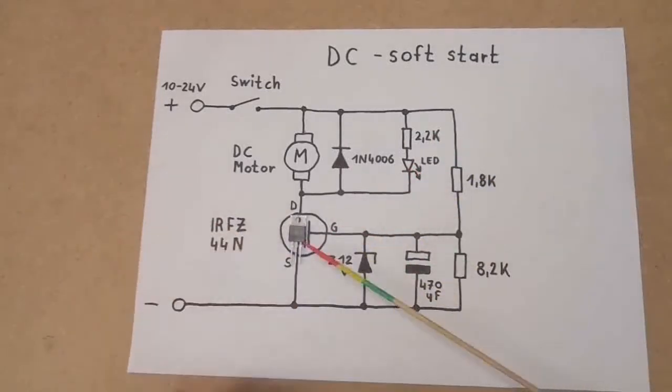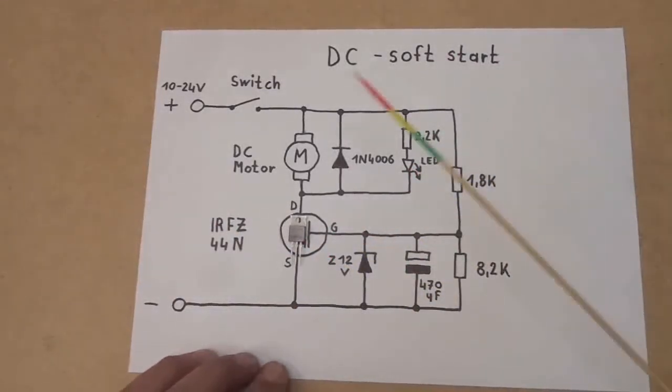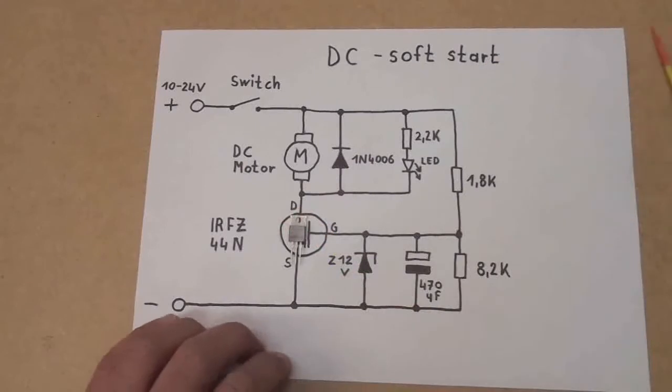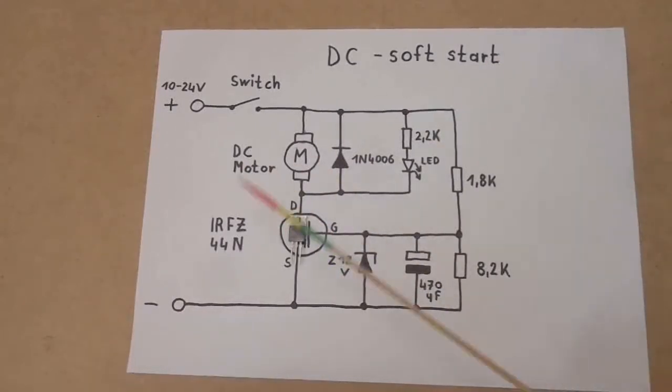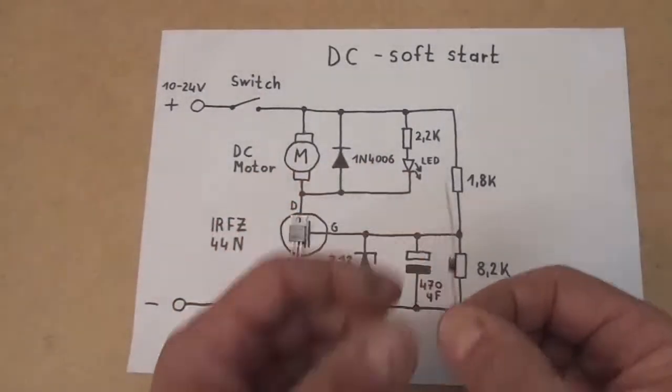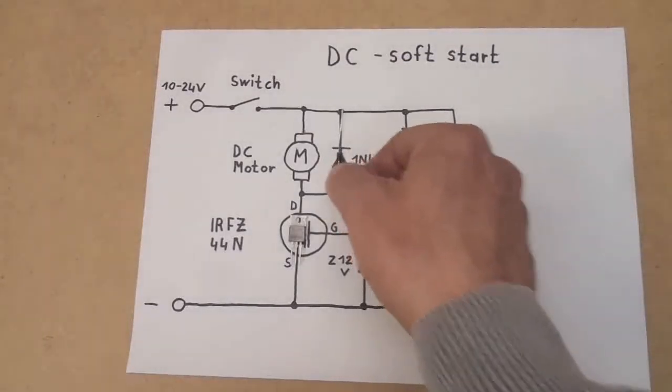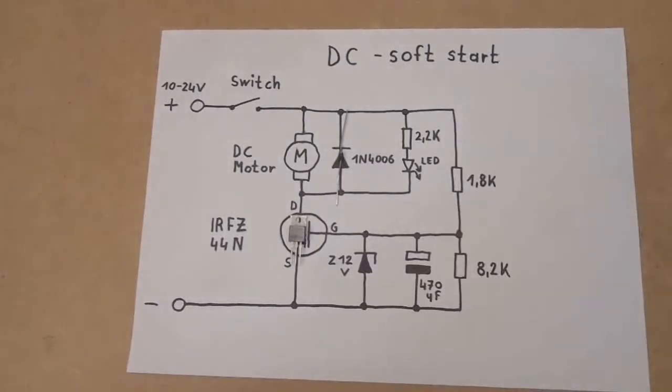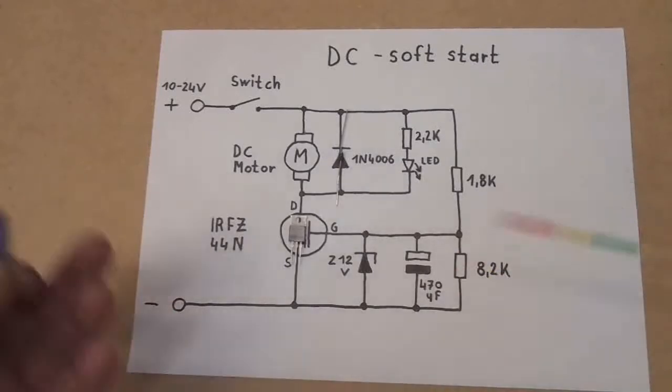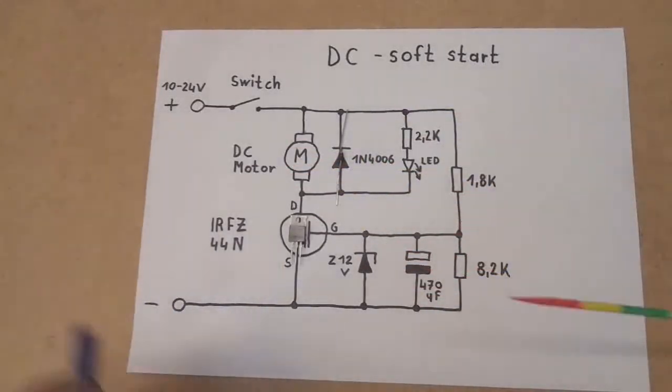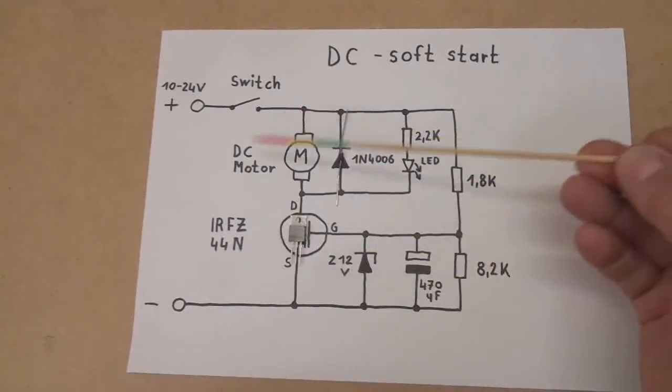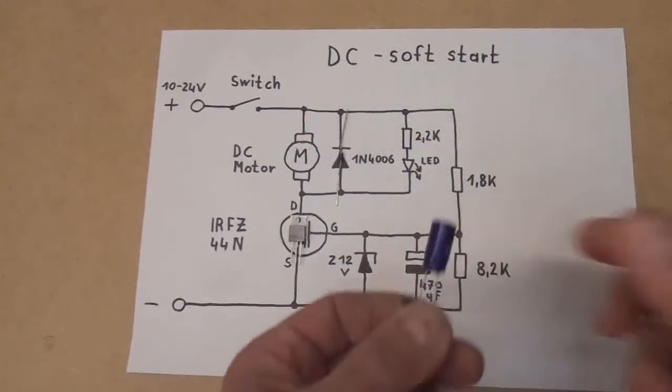For inductive loads you need a flyback diode to protect the MOSFET against voltage spikes. So here is a 1N4006, 800 volt 1 amp diode. Furthermore, you need a capacitor, an electrolytic capacitor for the timing - how long it will take to start up to the full voltage depends on the value of this capacitor.